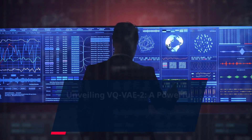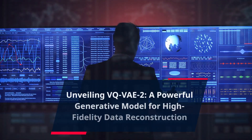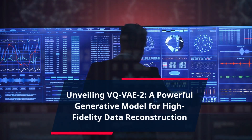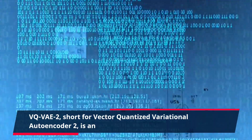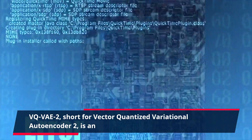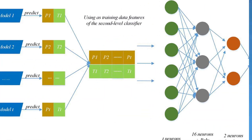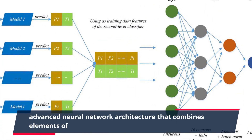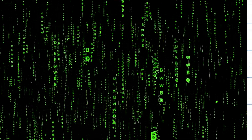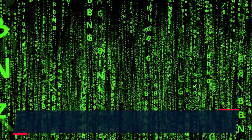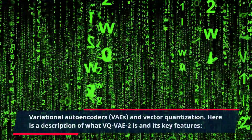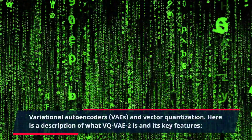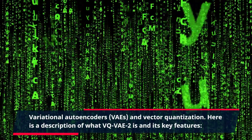Unveiling VQVAE2, a powerful generative model for high-fidelity data reconstruction. VQVAE2, short for Vector Quantized Variational Autoencoder 2, is an advanced neural network architecture that combines elements of variational autoencoders, VAEs, and vector quantization. Here is a description of what VQVAE2 is and its key features.